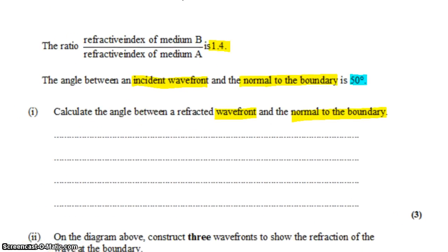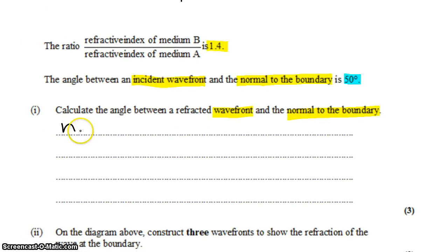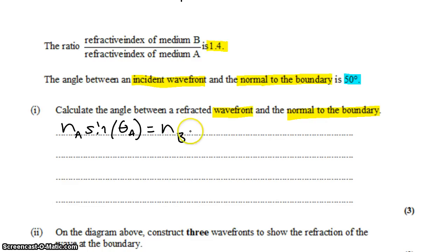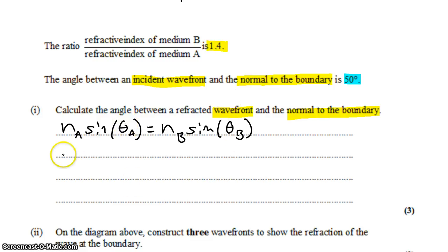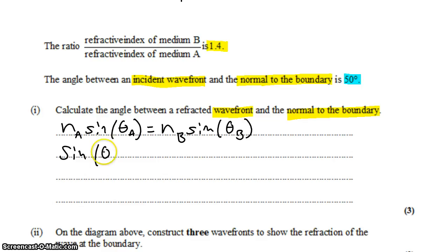Now let's apply Snell's Law. Snell's Law states that the index of refraction in medium A times the sine of the angle of incidence in medium A equals the index of refraction in medium B times the sine of the angle of refraction in medium B. We know theta A — it's 40 degrees — and we want to find theta B. Let's rearrange to solve for sine of theta B first.